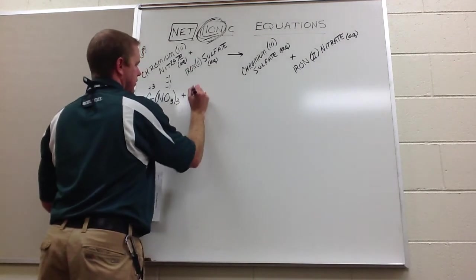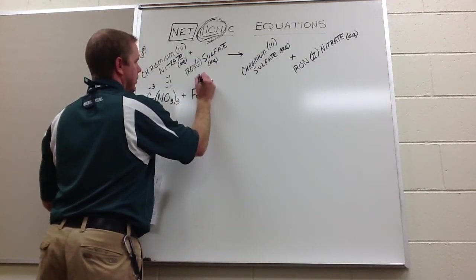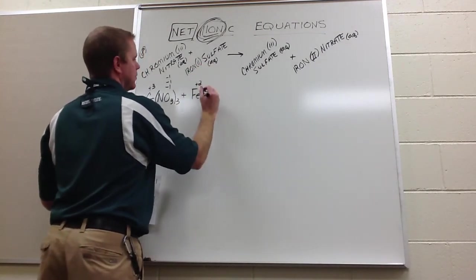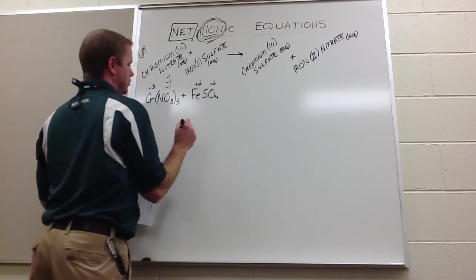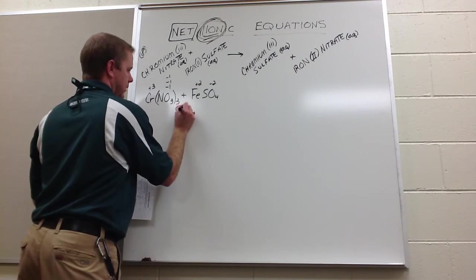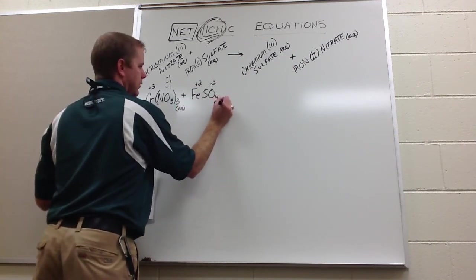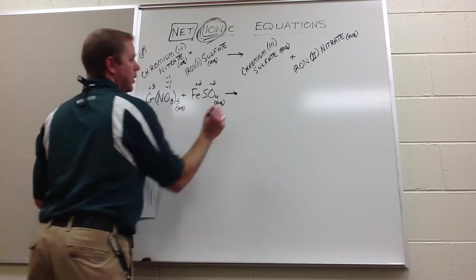Plus iron two sulfate. Iron is Fe, it's plus two. Sulfate is SO4, it also carries a negative two charge. By the way, I can't forget, this is aqueous, this is also aqueous. Those are going to be important for us when we go to dissociate them.